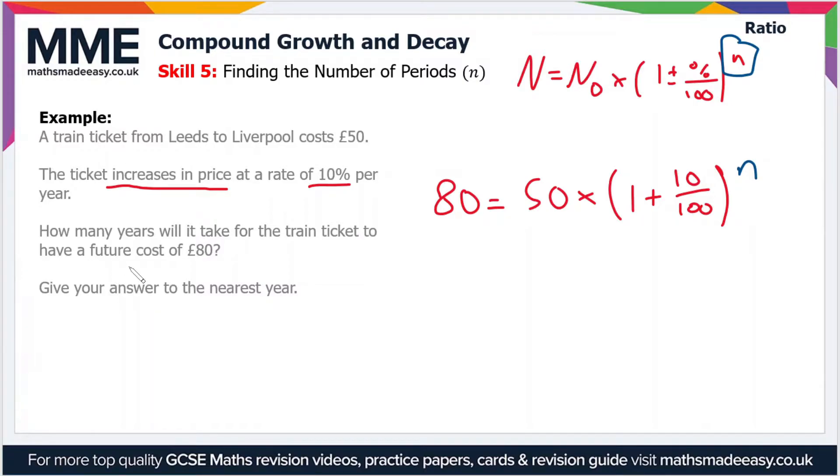And that rate of change is 10% per year, so 10 divided by 100. Now we want values of n, so essentially what we have to do here is substitute values of n to this formula, or specifically this part of the formula. And then once we substitute in these values, we're looking for one that gives us a future cost beyond 80.